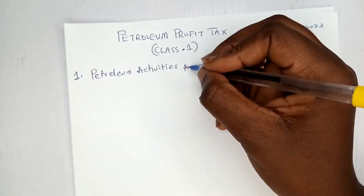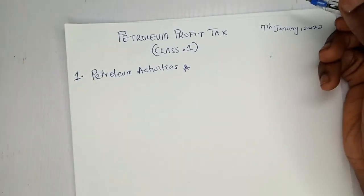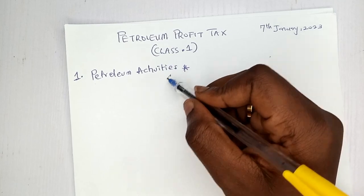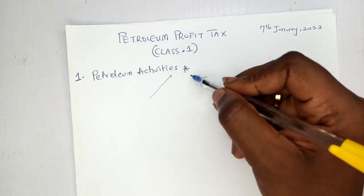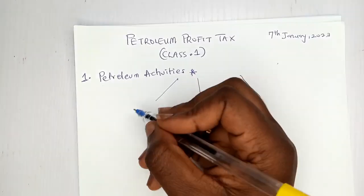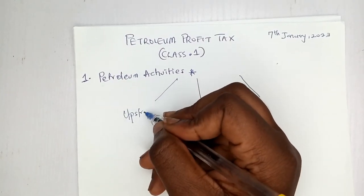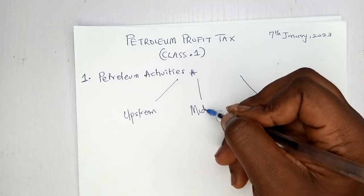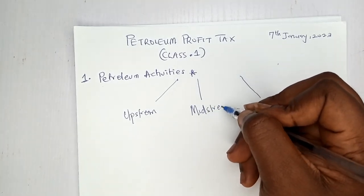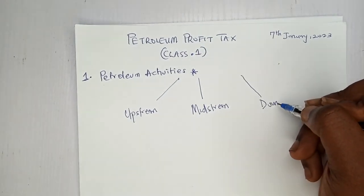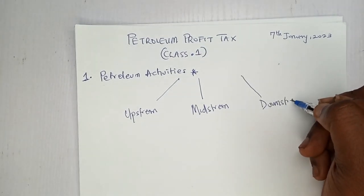Starting with Petroleum Activities — these are generally divided into three categories: Upstream Activities, Midstream Activities, and Downstream Activities.